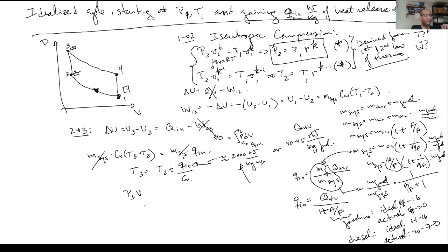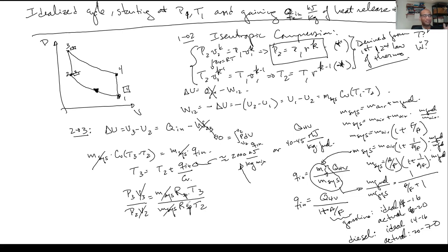I can also find P3. I know the ideal gas holds: P3*V3 = mass * R_specific * T3. This also holds at state two, so dividing both sides: P3/P2 = T3/T2, since from two to three the volume is constant, the mass is constant (closed system), and R_specific depends only on the material. So with knowledge of how much heat I'm releasing, I can find T3, and knowing T3 and T2, I can find P3.